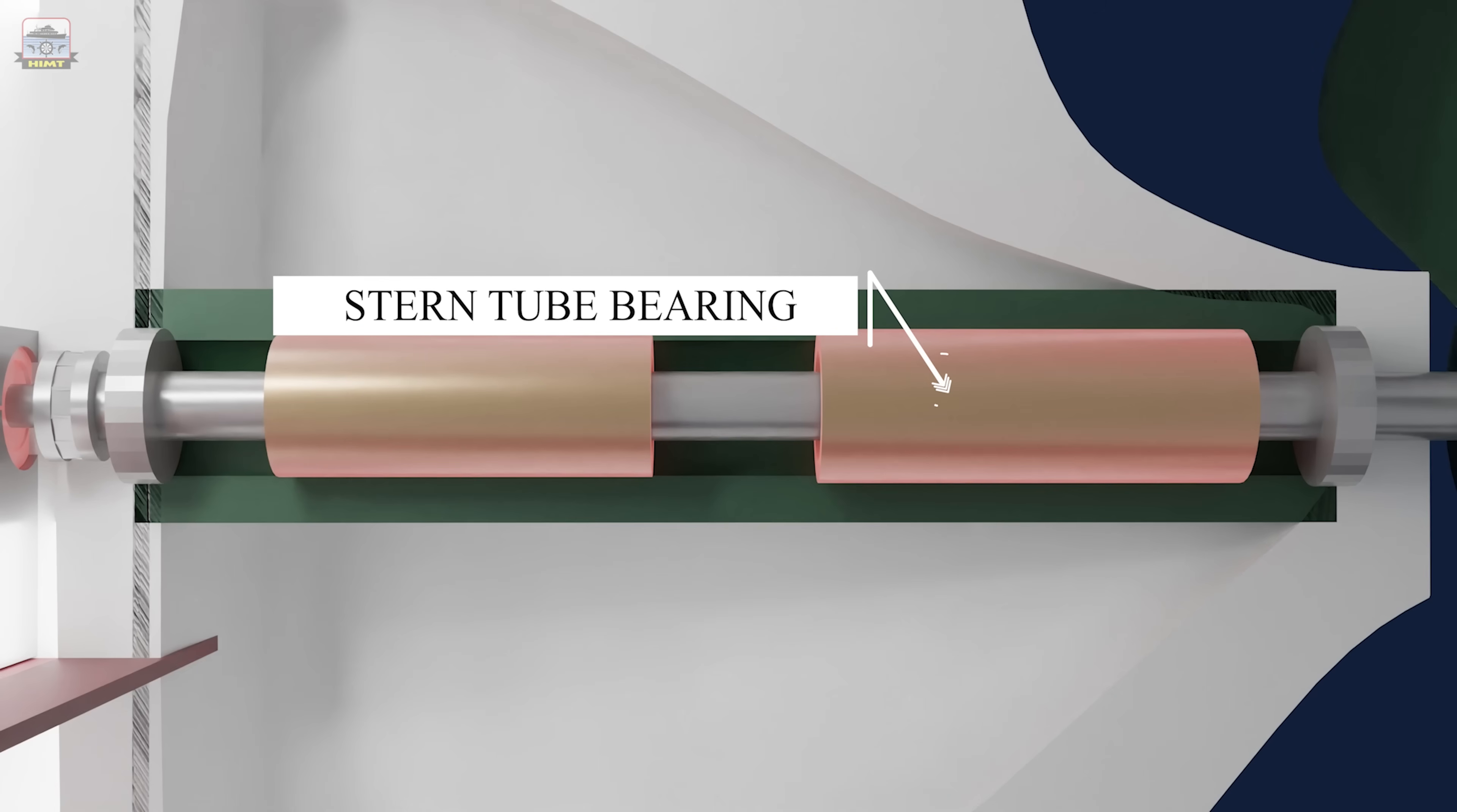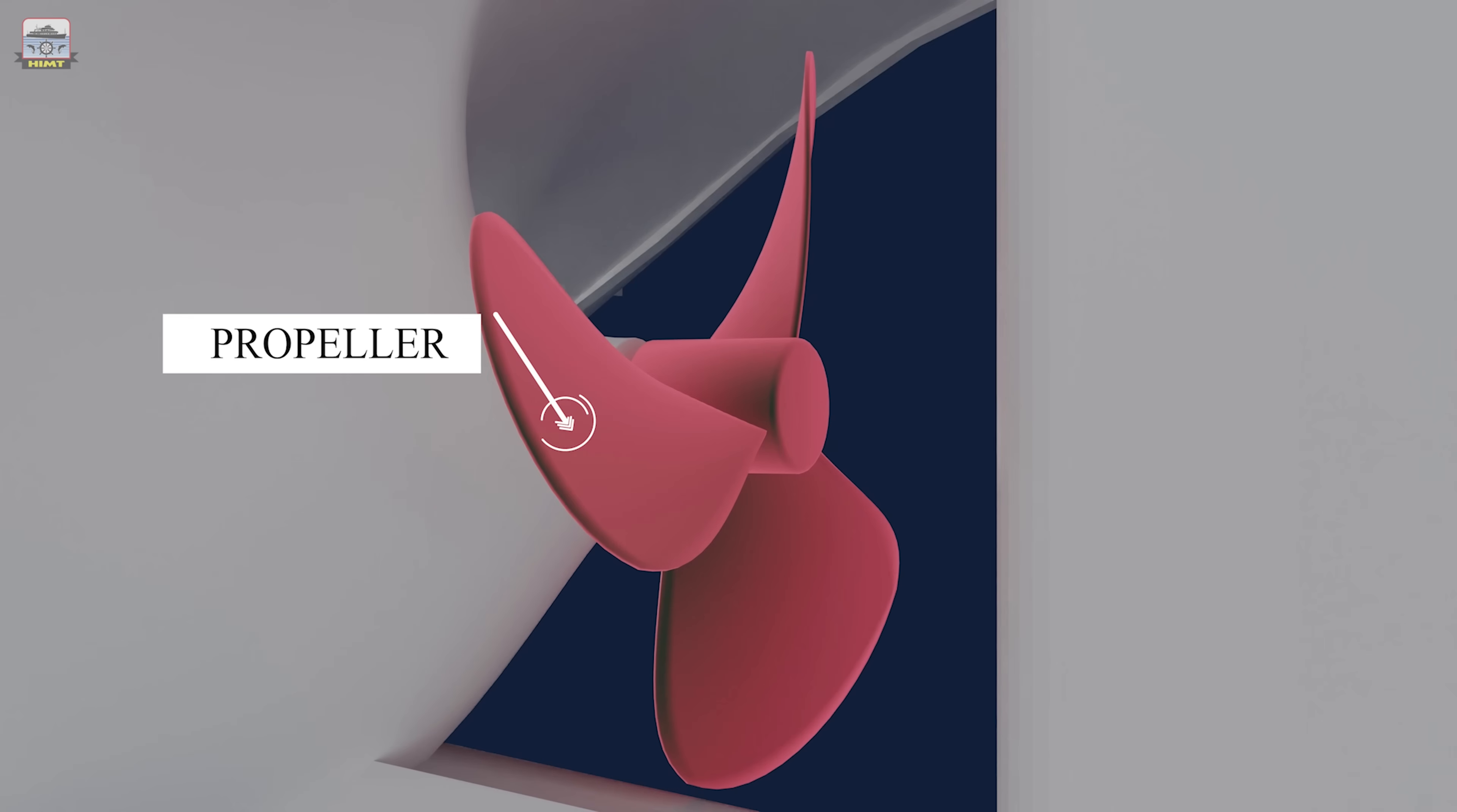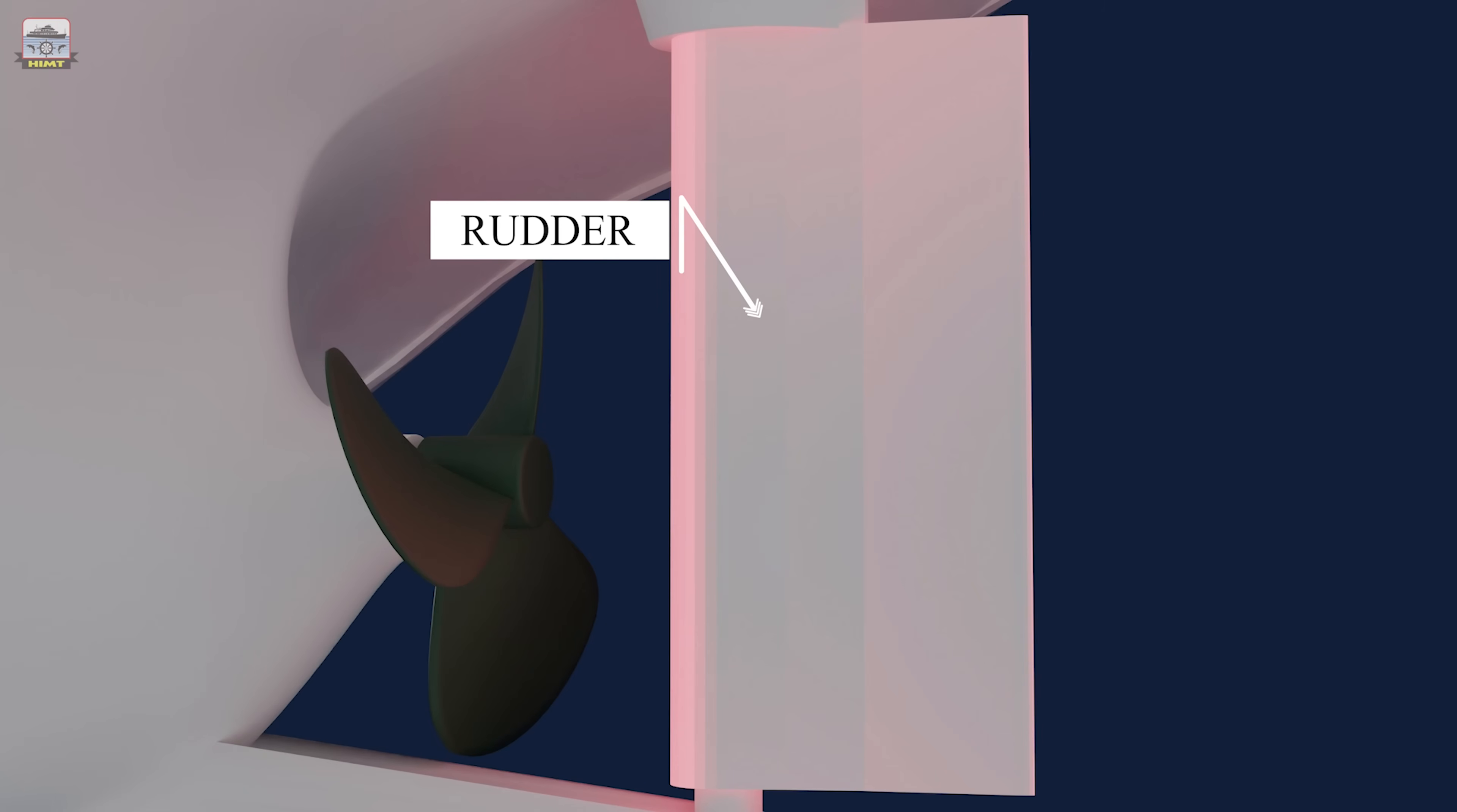The stern tube bearing supports the propeller shaft. Stern tube also accommodates the seals at the forward and aft portions to prevent the sea water entry into the stern tube and the leakage of stern tube lubricating oil to outside. The propeller is fitted at the end of the propeller shaft. The rudder fitted in the water stream created by propeller helps in achieving a desired course of the ship.